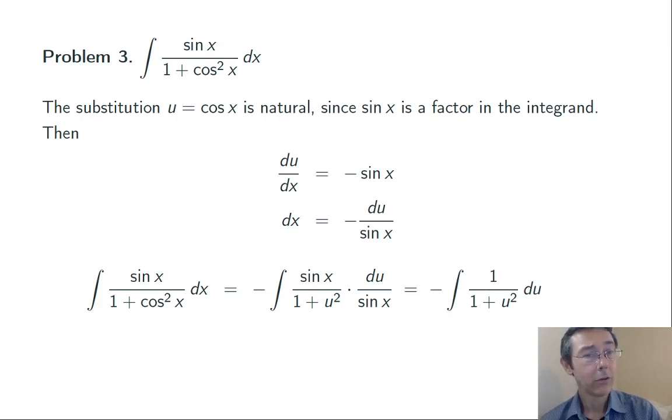Now that integral of 1 over 1 plus u squared is an inverse tangent. So negative inverse tangent of u plus c. Last step, take out the u, replace it with cosine x to get our final answer. Negative tan inverse cosine x plus c.